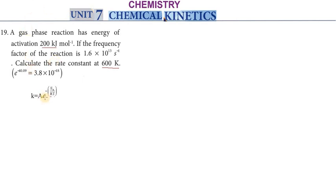So, what do we use? K is equal to A into E power minus of Ea by RT. In the Arrhenius equation, page number 220, Arrhenius is suggested by this formula.